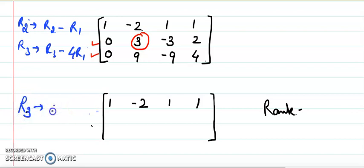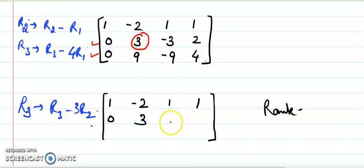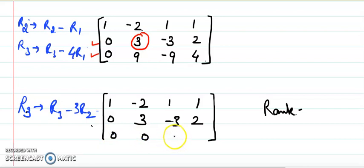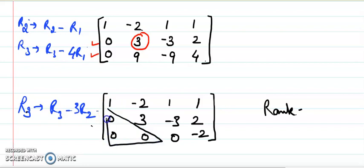In R3 we subtract 3 times R2. R2 is not going to change since we are using it on R3. R3 minus 3R2: 9 minus 9 = 0, minus 9 plus 9 = 0, 4 minus 6 = minus 2. We have now received echelon form since all entries below the diagonal are zero and the number of leading zeros is increasing. All three rows are non-zero rows, so the rank is 3.